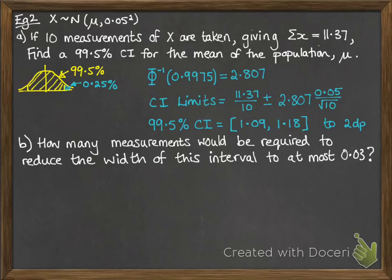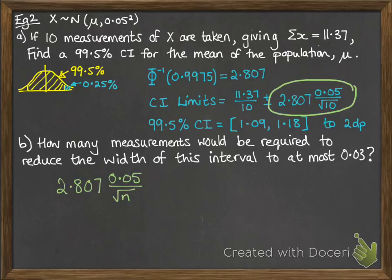Part b: How many measurements would be required to reduce the width of this interval to at most 0.03? The width of the interval comes from this part just here, the bit we add on or take away from the sample mean. That determines how wide the interval is. We get that 2.807 and the 0.05 over root n. It's root n because we don't know how many measurements we're taking. That's going to be doubled so we've got the full width, not just from the mean to the upper or lower limit. That has to be less than 0.03. Follow that through and you get that we need a sample size that is at least 88.